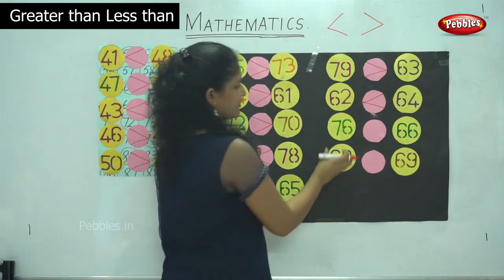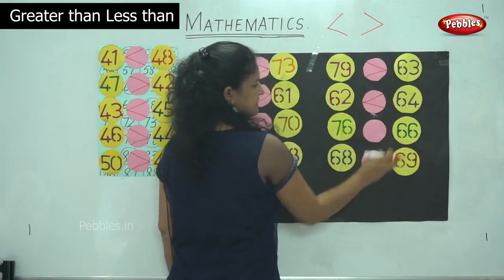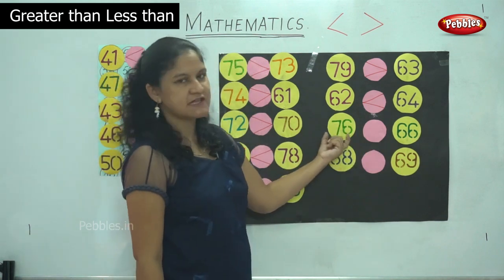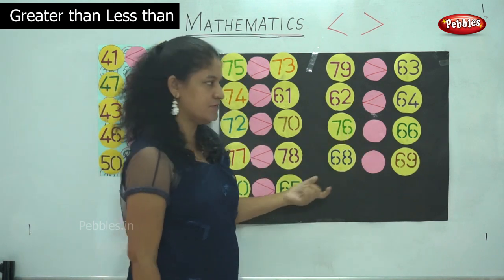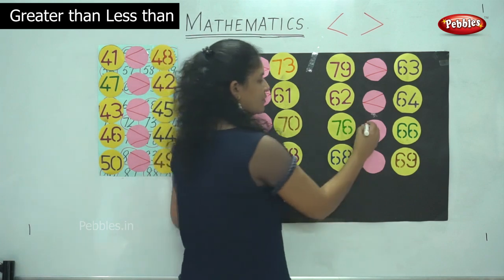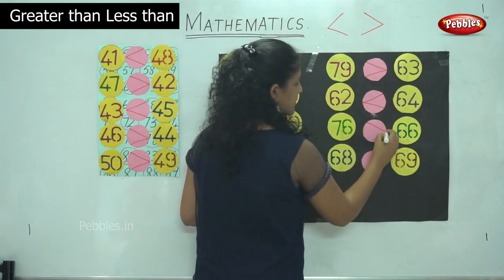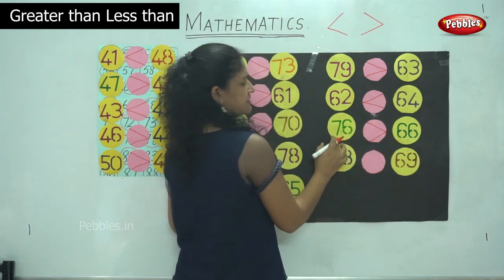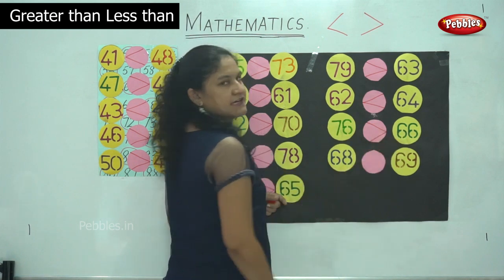Next we have 76 and 66. When you compare these two numbers, 76 is the bigger number, so the mouth opens towards the bigger number. We read it as 76 is greater than 66.